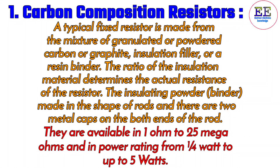Carbon composition resistors. A typical fixed resistor is made from a mixture of granular or powdered carbon or graphite, insulation filler, and a resin binder. The ratio of the insulation material determines the actual resistance of the resistor. The insulating core is made in the shape of a rod with two metal caps on both ends. They are available from one ohm to 25 mega ohms and in power ratings from quarter watt up to five watts.